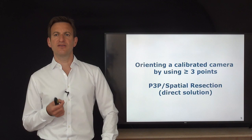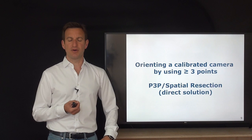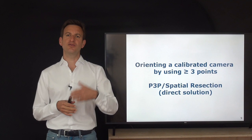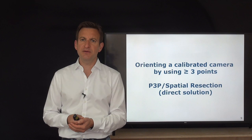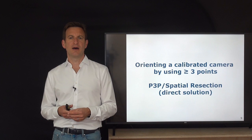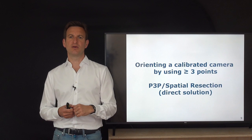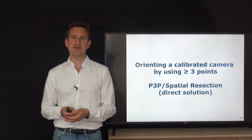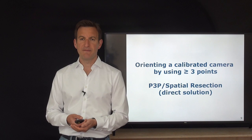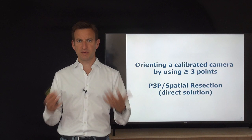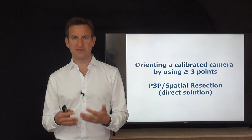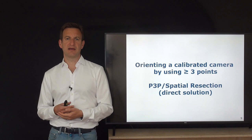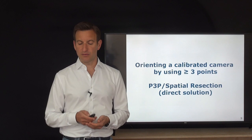We now dive into computing the orientation of a calibrated camera using at least three points. The solution presented is a direct solution requiring no initial guess, though it is not statistically optimal — we assume perfect pixel coordinates and ignore uncertainties in the 3D control points. This direct solution can serve as an initial guess for a subsequent least-squares approach that properly accounts for uncertainties.